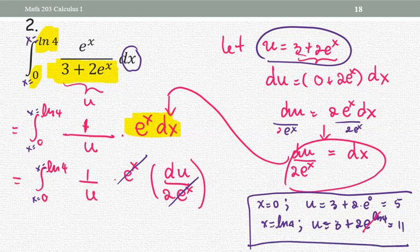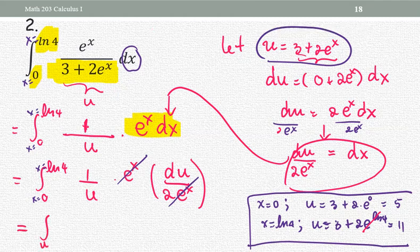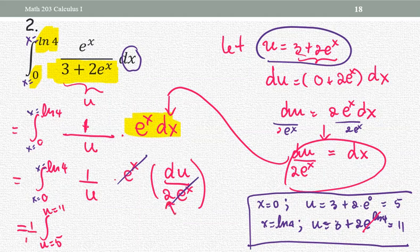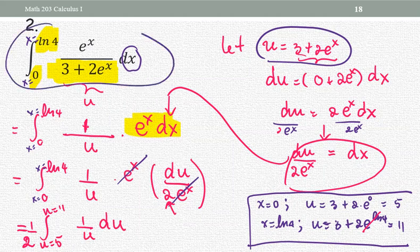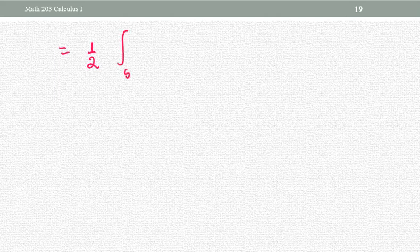Back to the problem. Now the lower limit is u equals five and the upper limit is u equals eleven. The coefficient one-half is taken outside the integral sign. The integrand is just one over u with respect to u. We have transformed everything that began in x into totally the form of u. Let me rewrite it clearly: one-half times the integral from u equals five to u equals eleven of one over u with respect to u.